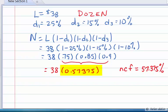So our net price is going to end up being 57.375% of our list. Now, multiplying this net cost factor of 0.57375 by the list price of $38, we end up with a net price for each of our chairs of $21.80.